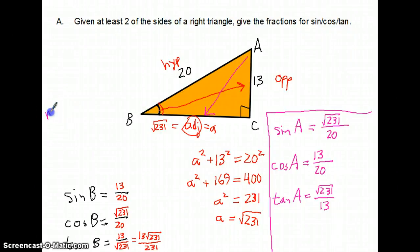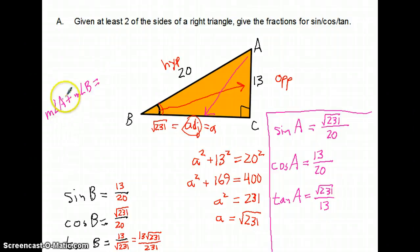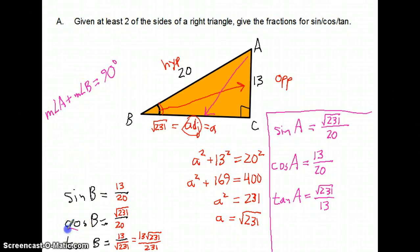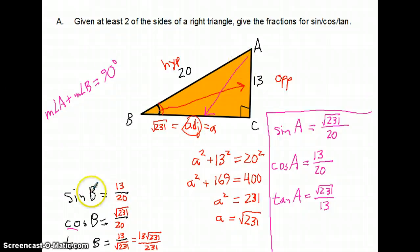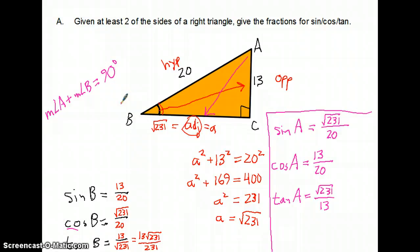Since this is a right triangle, we know something interesting. Measure of angle A plus measure of angle B equals 90 — they are complementary angles. Part of the reason we call it cosine is because it's the sine of the complementary angle. If the sine of B is 13 over 20, then the sine of the complement — which is angle A — has to use the adjacent over hypotenuse, which is cosine of B. So cosine B equals sine A. Trigonometry has all these cool internal relationships that keep coming back.